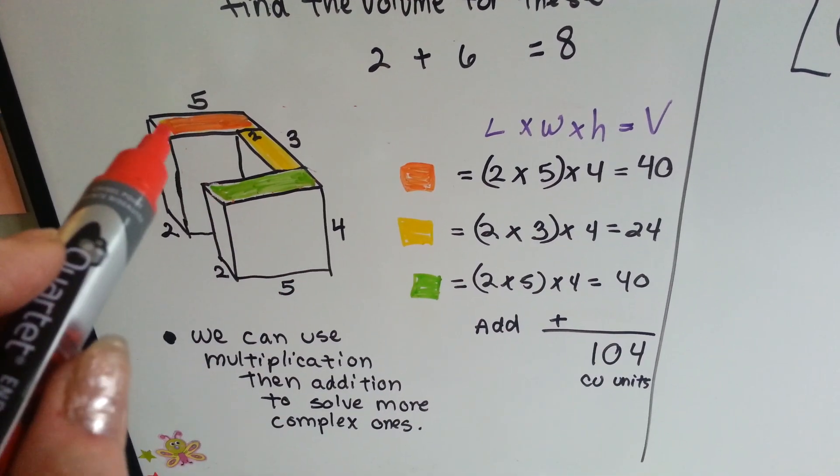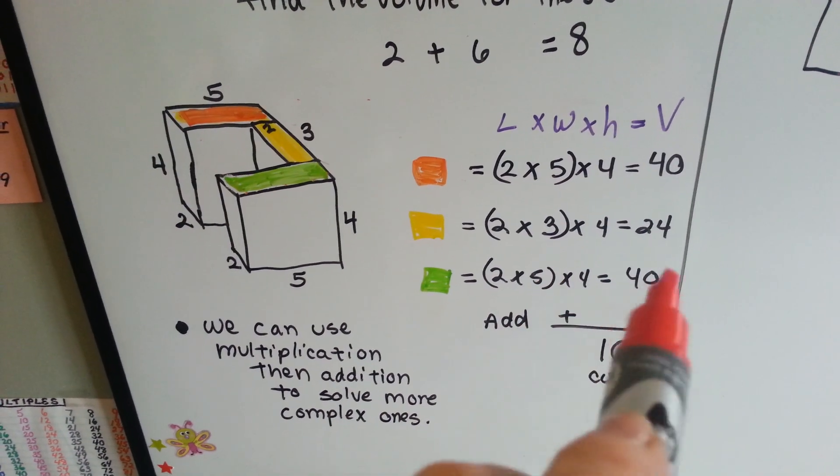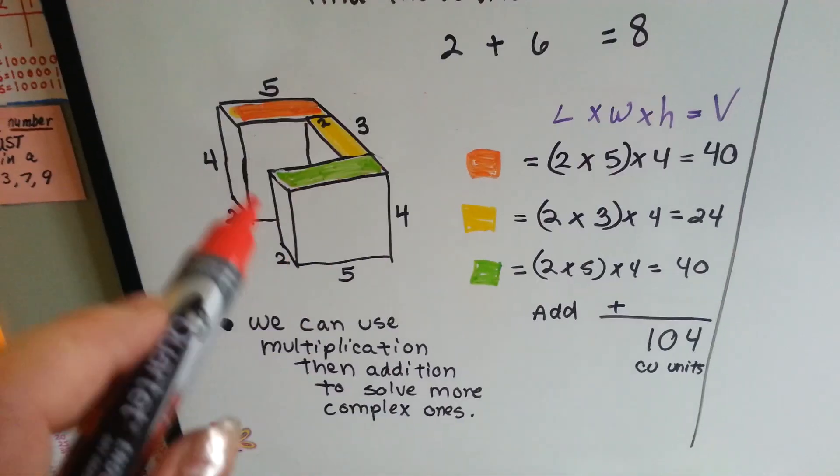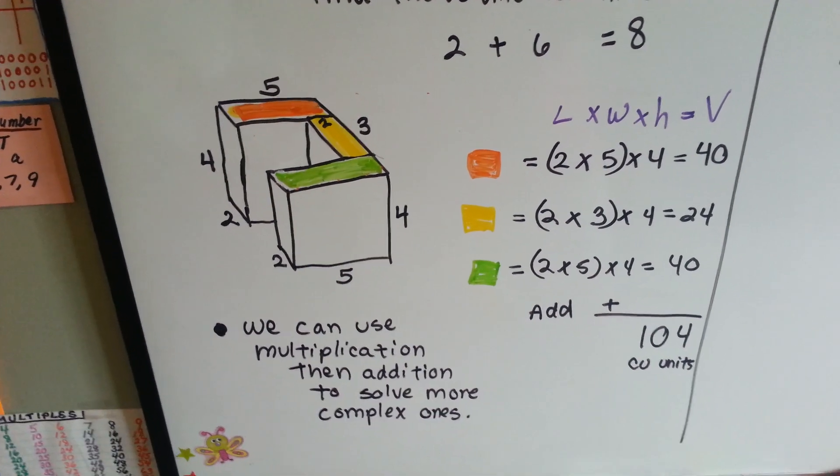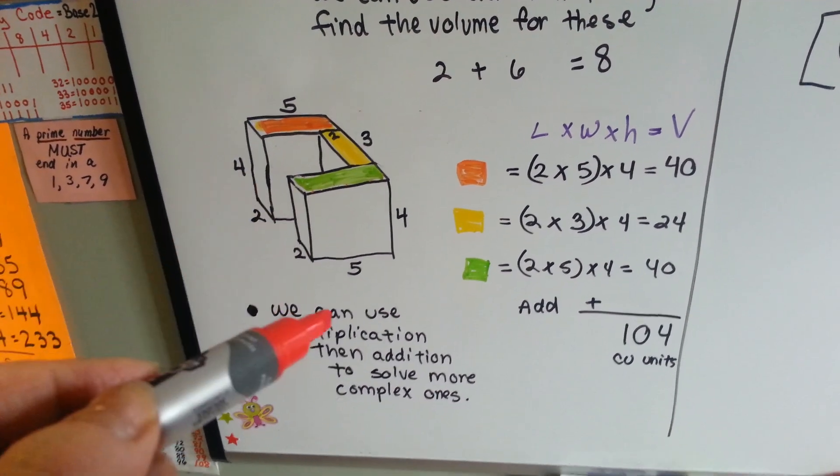And for the last one, it's just like this orange one. It's 2 times 5 times 4, which is 40. And then our final answer is 104 cubic units. I didn't specify inches or centimeters. But it could be cubic inches, cubic centimeters, cubic yards, cubic feet, right?